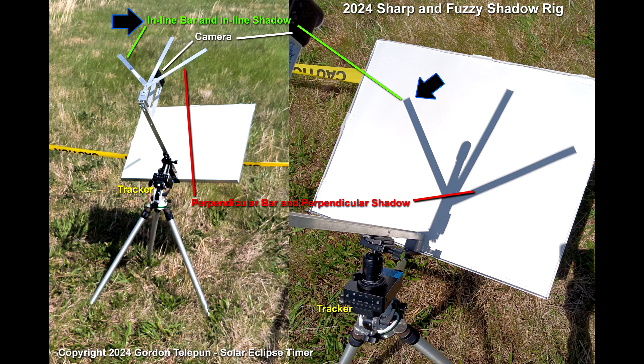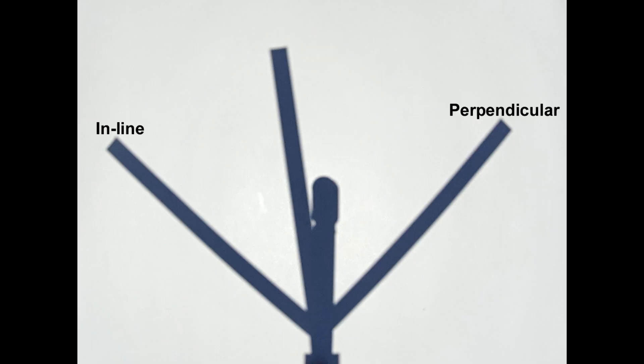There's a bar that's in line with the crescent creating a shadow and then there's a bar that's perpendicular to the crescent creating a shadow. So here's how the shadows look on the board.